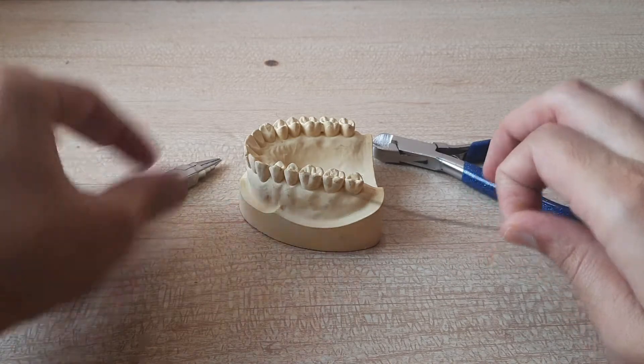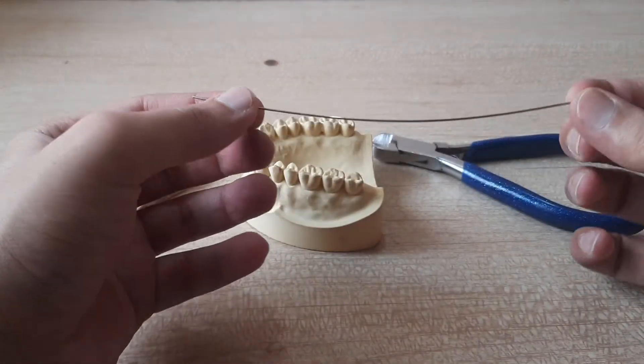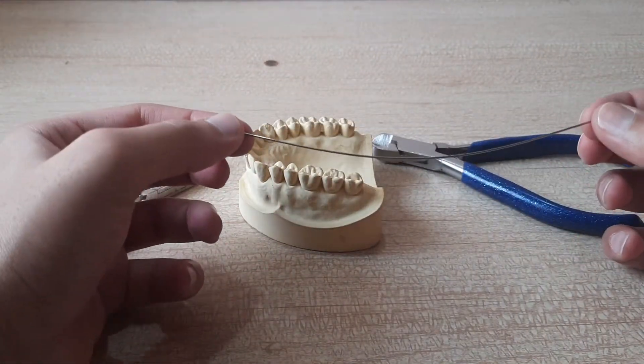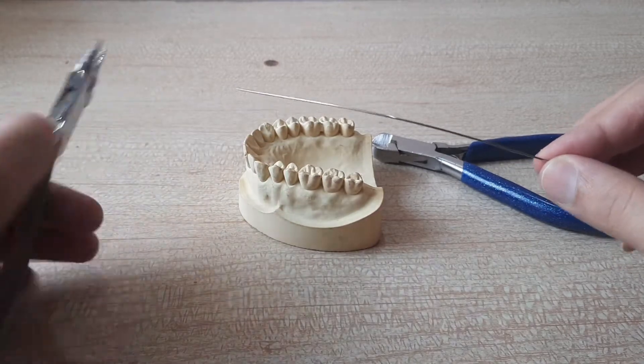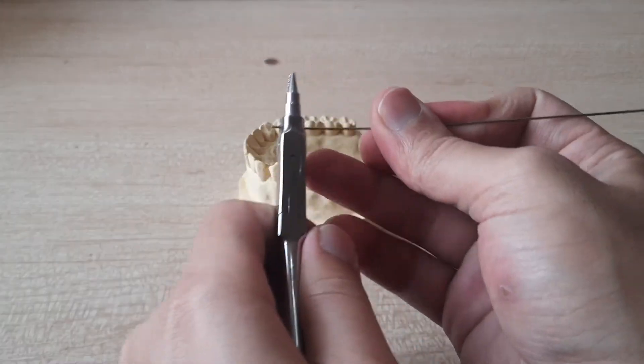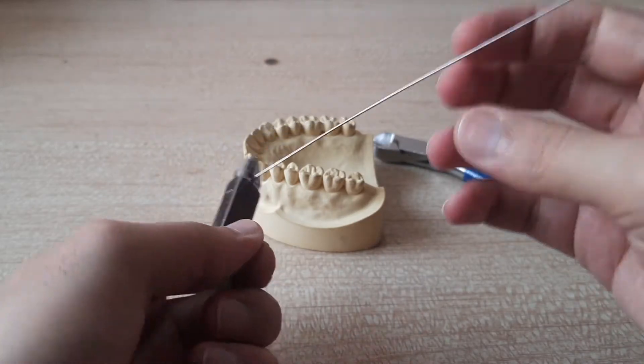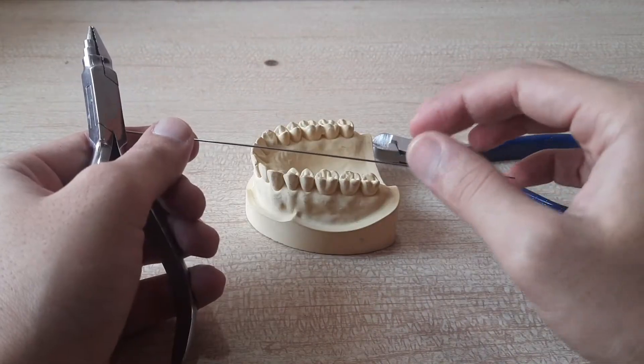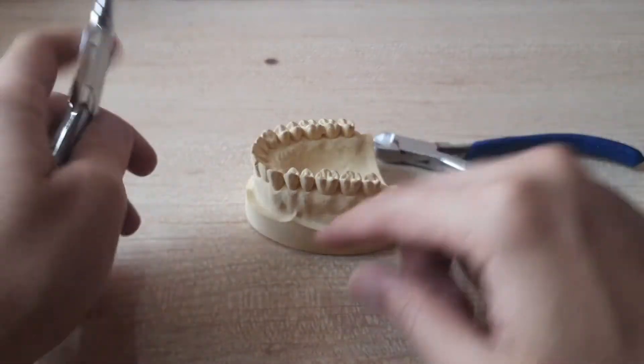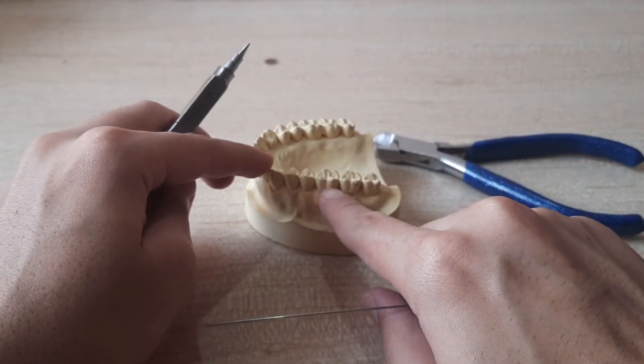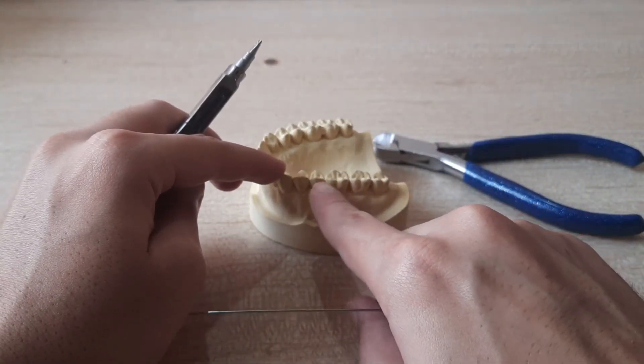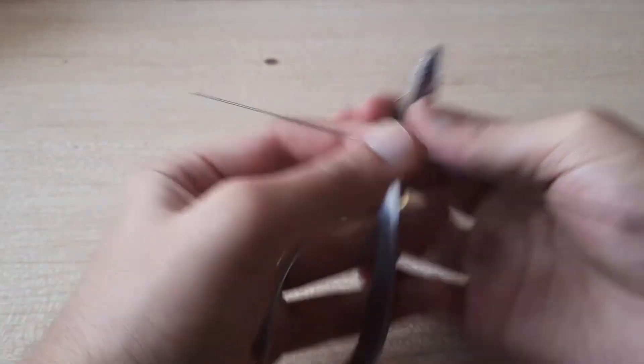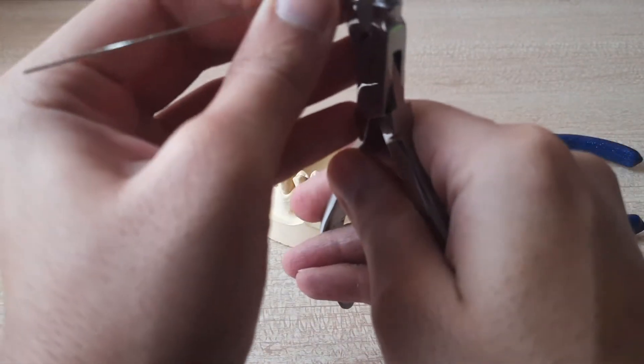So first of all you take the wire and I've already cut it into the size which I want. You just have to straighten it a little because a little bit of straightness is required, not completely but yeah this much is fine.